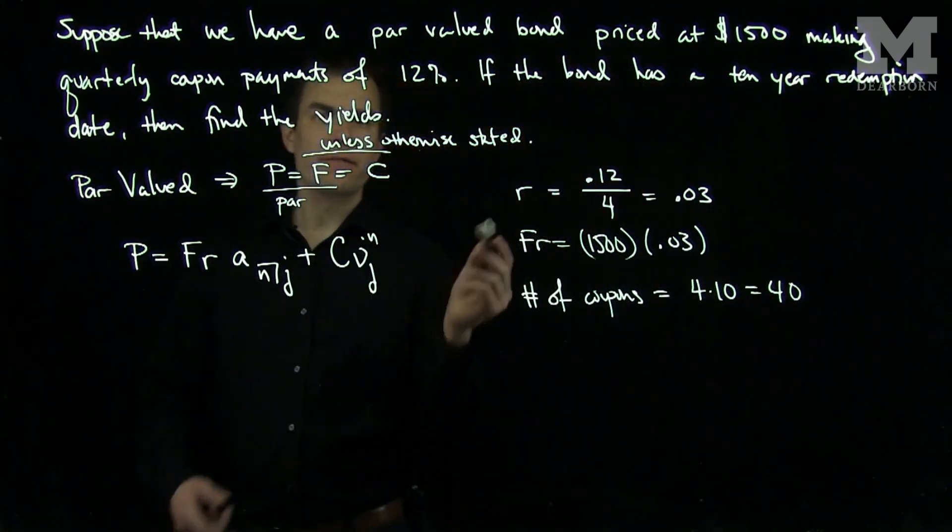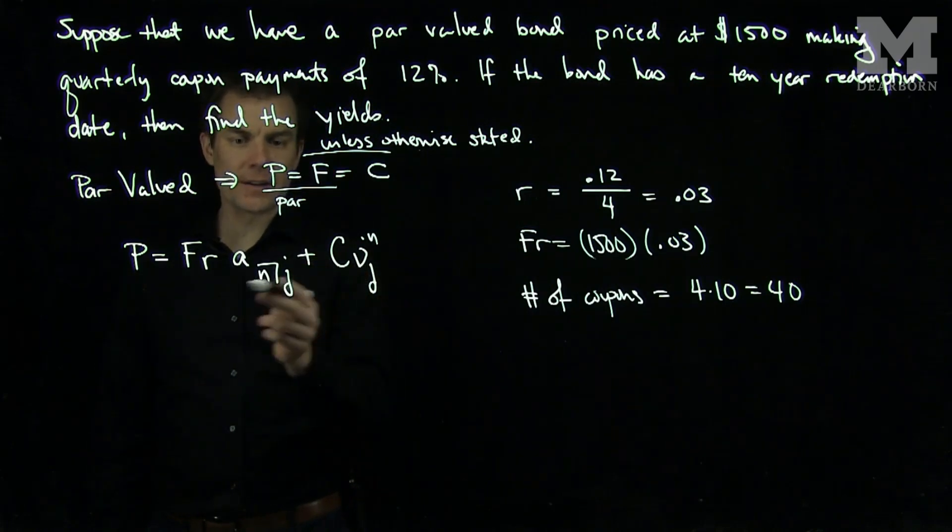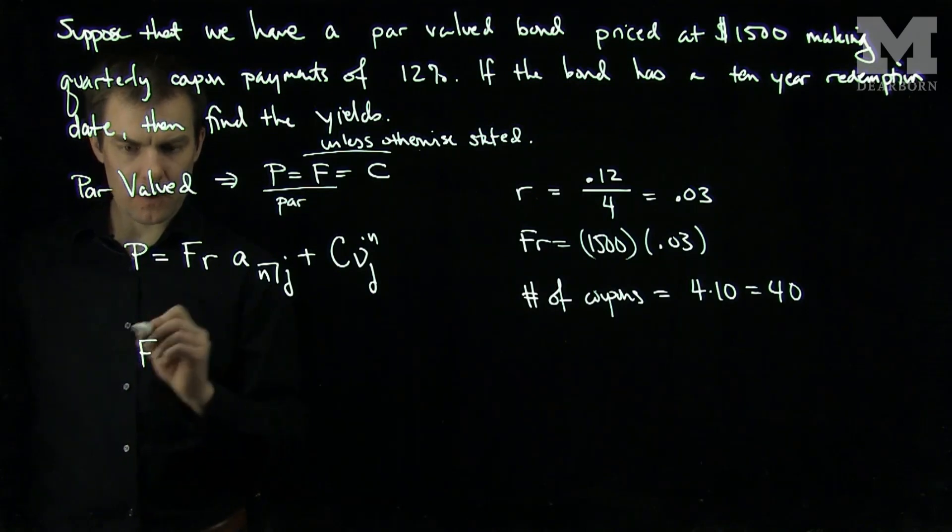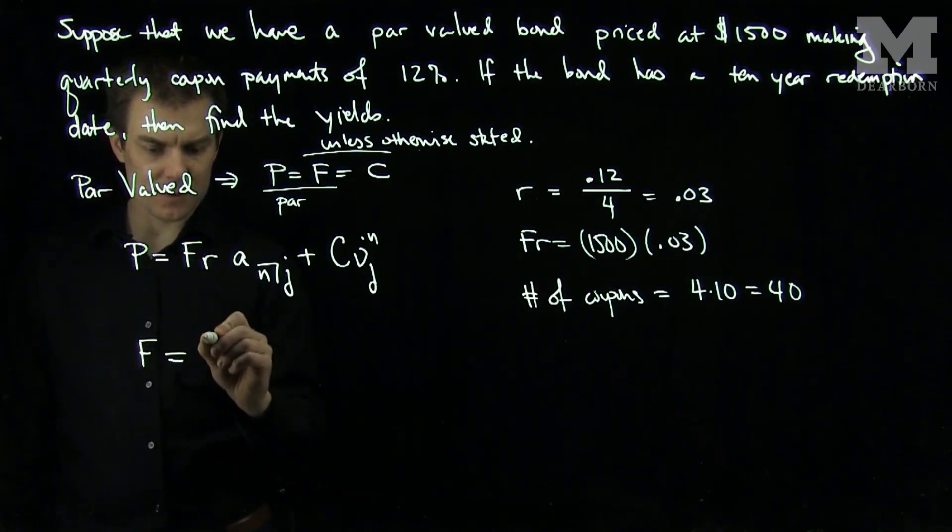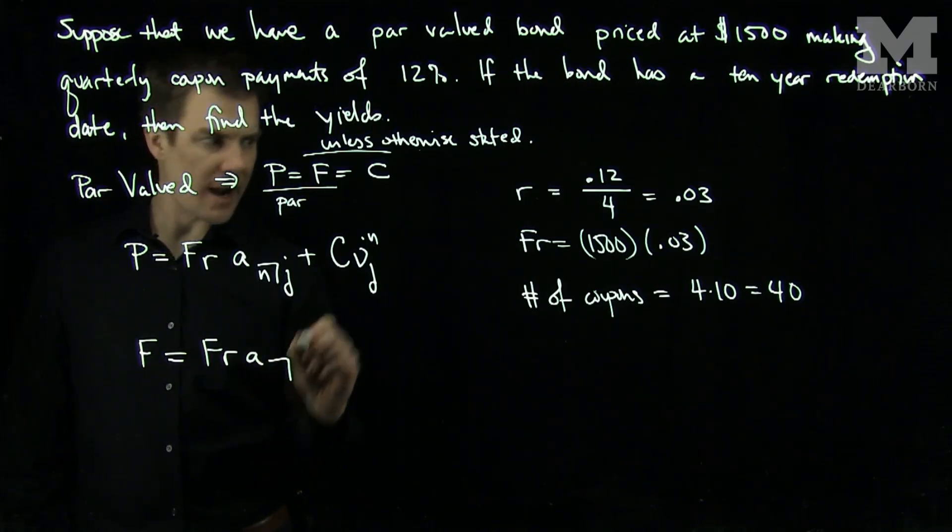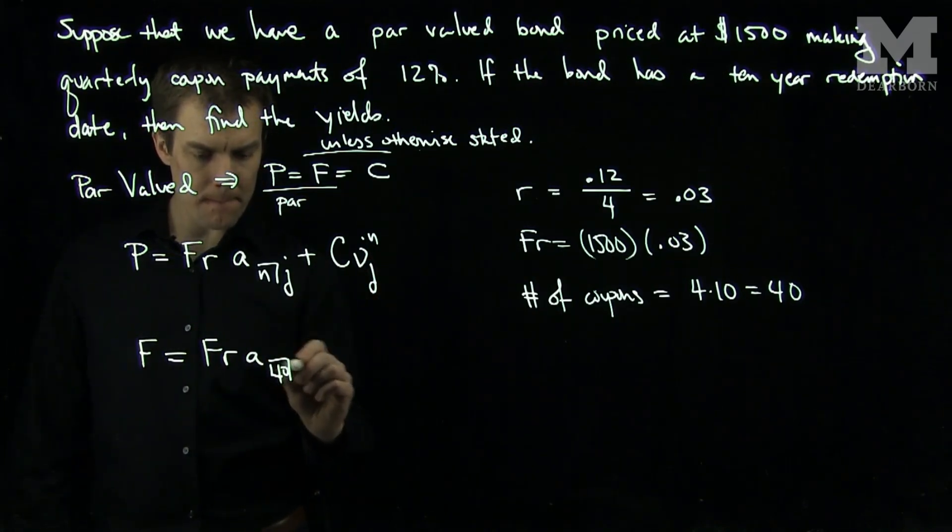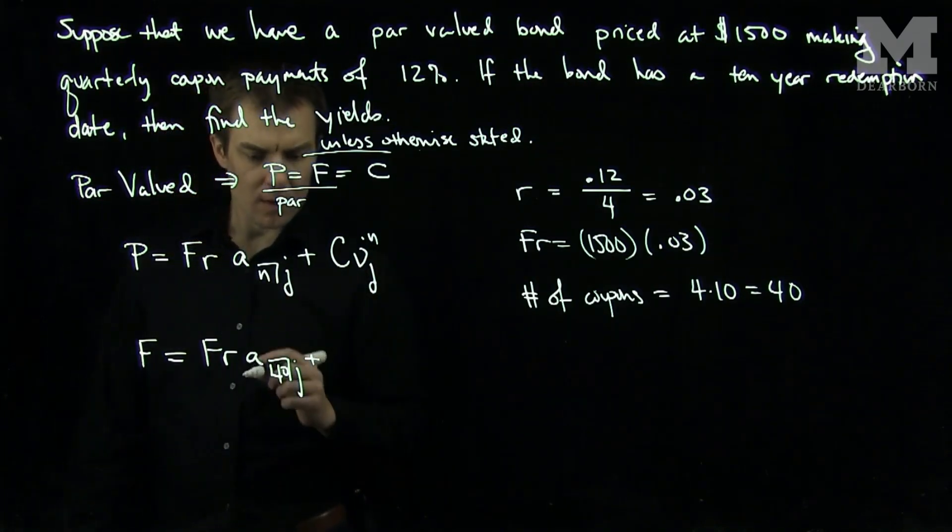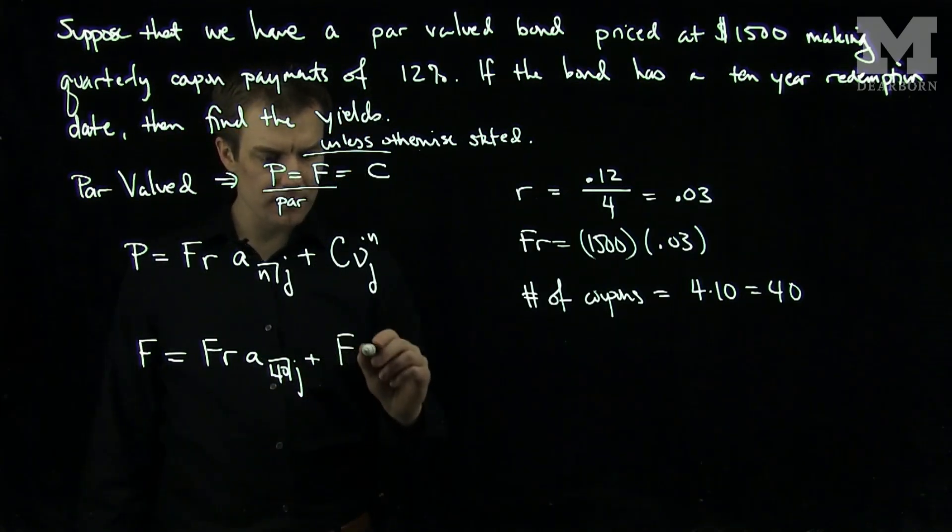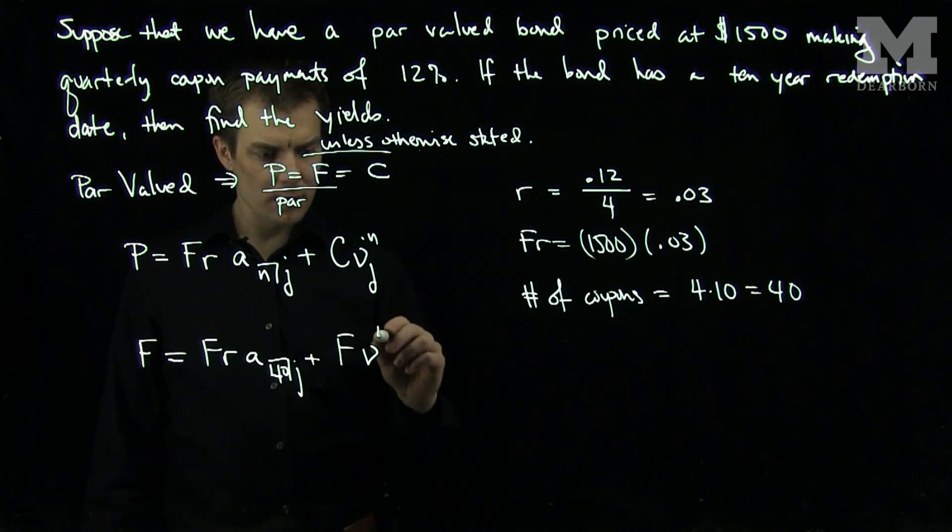And now we wish to find the yields, so I need to find J from this equation. So we have F, the price, is the face, is F times R, A bracket 40 J, plus F nu to the 40th power.